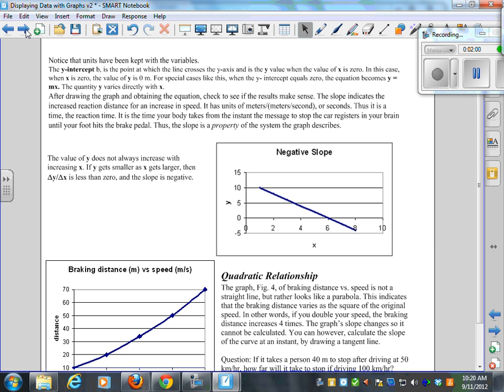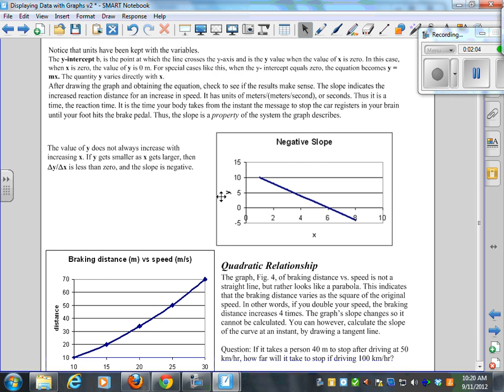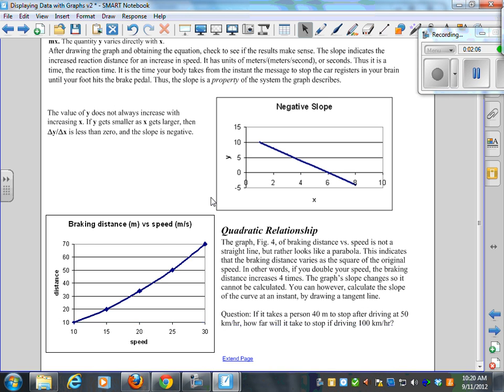We talked about linear relationships. We talked about negative slope. We talked about quadratic relationships. That's where you have an X squared in there. And I showed you that if you double your speed, what happens to the braking distance? Four times. What if you triple your speed? Nine times. You take that speed change and square it. If it was two and a half times faster then you take two and a half squared.